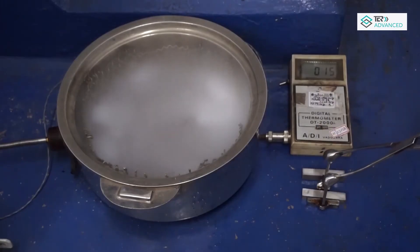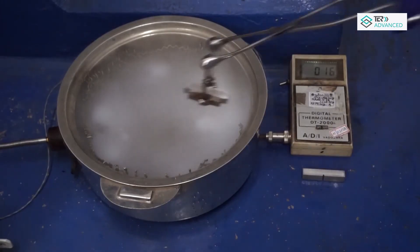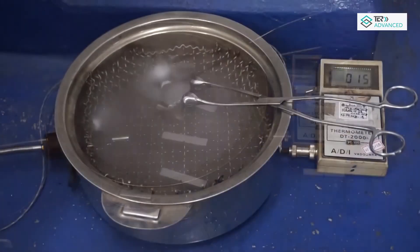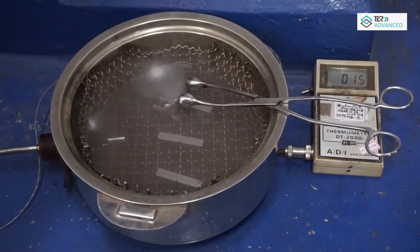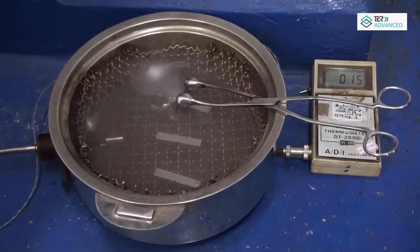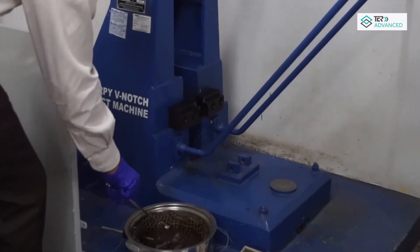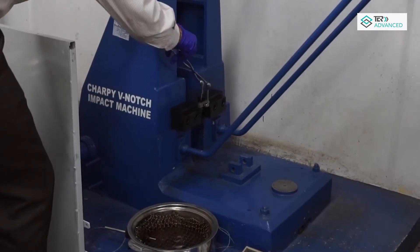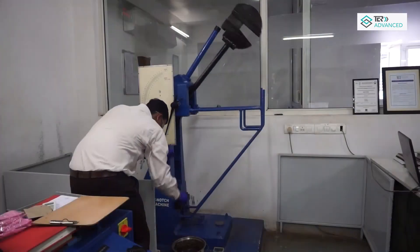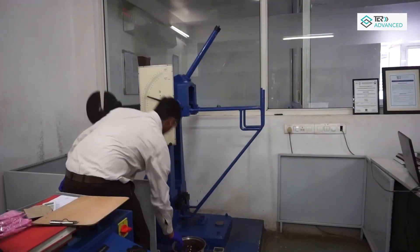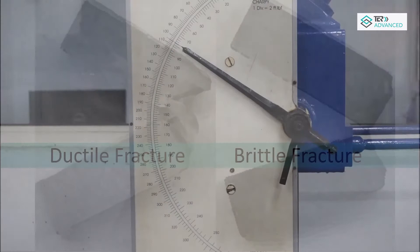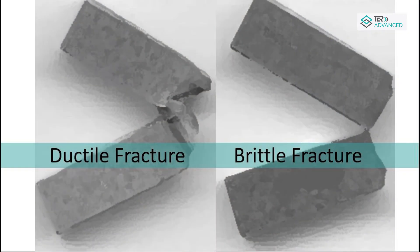The specimens are dipped under a specified temperature and soaked for 5 minutes. The specimen is then placed into the machine immediately and the pendulum is released to strike the sample. The state of the specimen shows the toughness of the material, depicting how much force it can absorb.